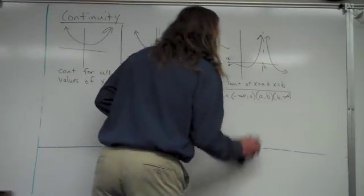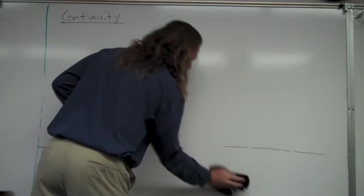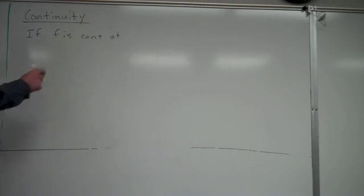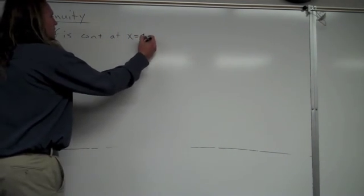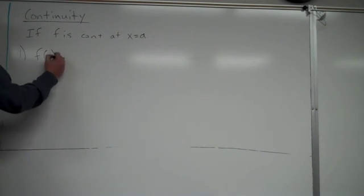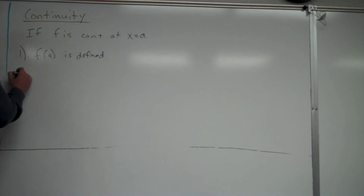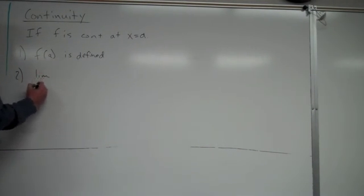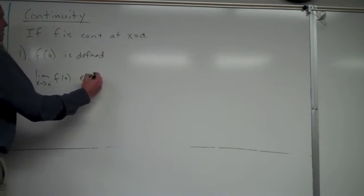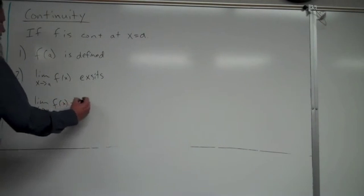There is a formal definition of continuity. If f is continuous at x equals a, three criteria must be met. One: f(a) must be defined — there must be some value associated with it. Two: the limit as x approaches a of f(x) must exist. Three: the limit as x approaches a of f(x) must equal f(a). If all three conditions are met, the function is continuous at x equals a.